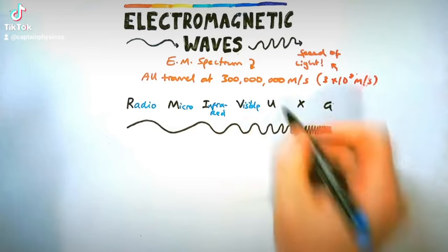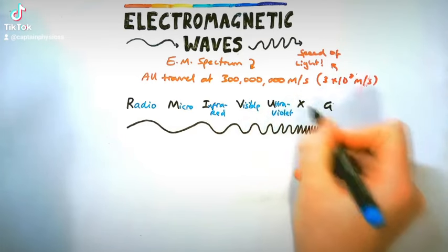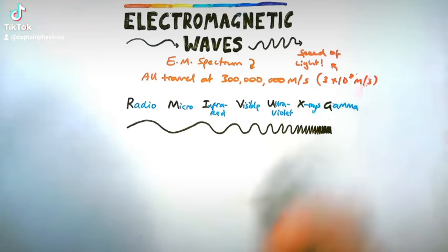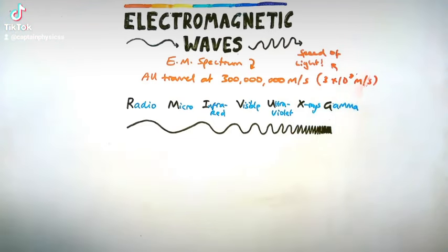Now, you need to know all the different parts, which hopefully you'll know already. So we start off with radio waves, then we've got microwaves, infrared, visible, ultraviolet, x-rays and gamma rays.